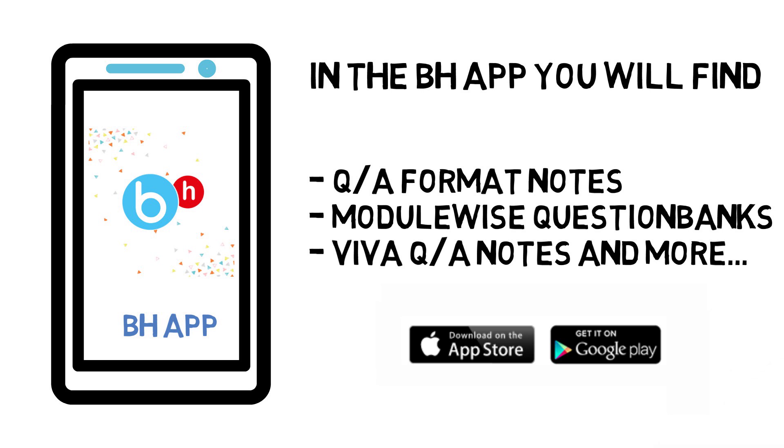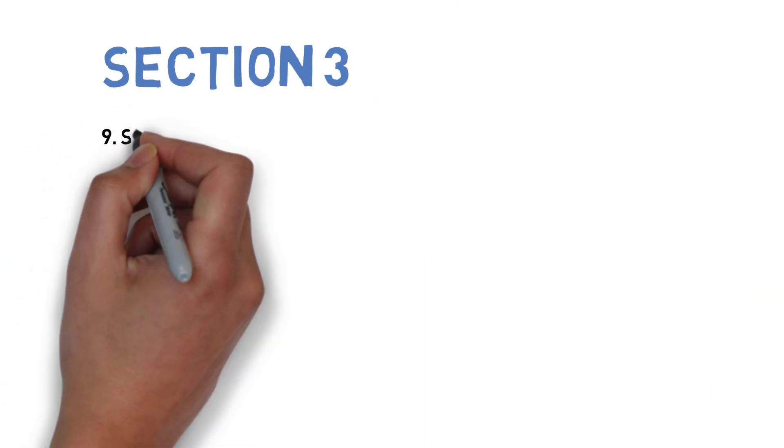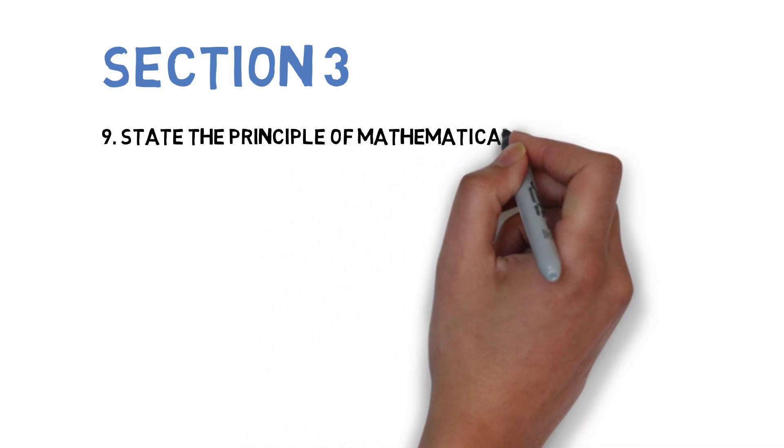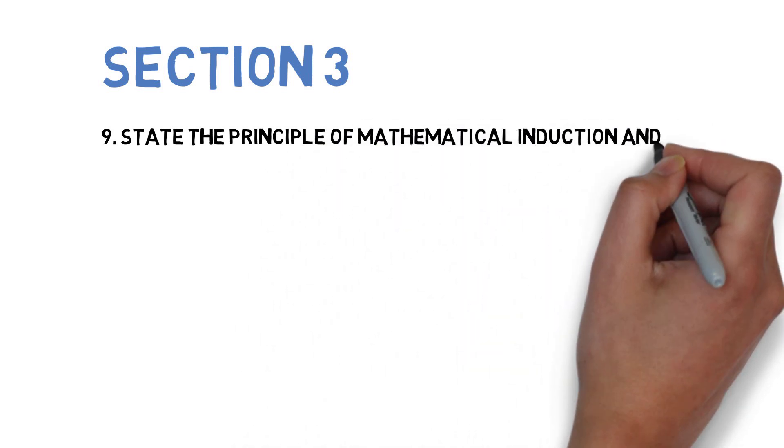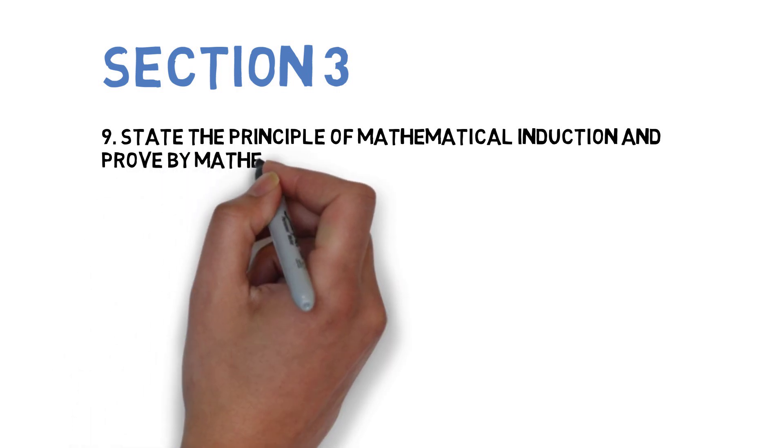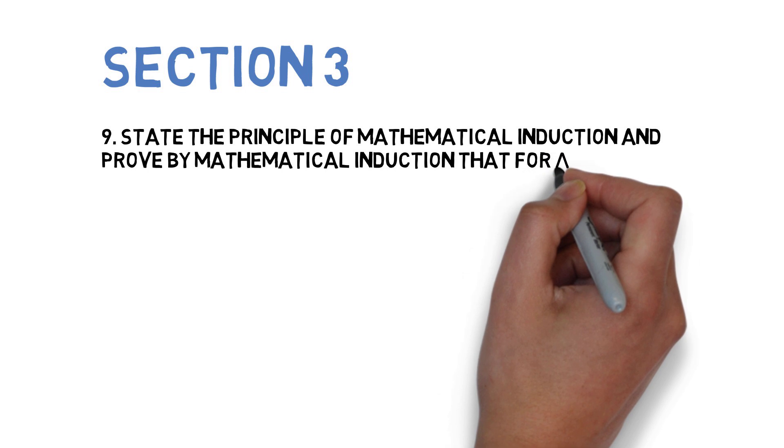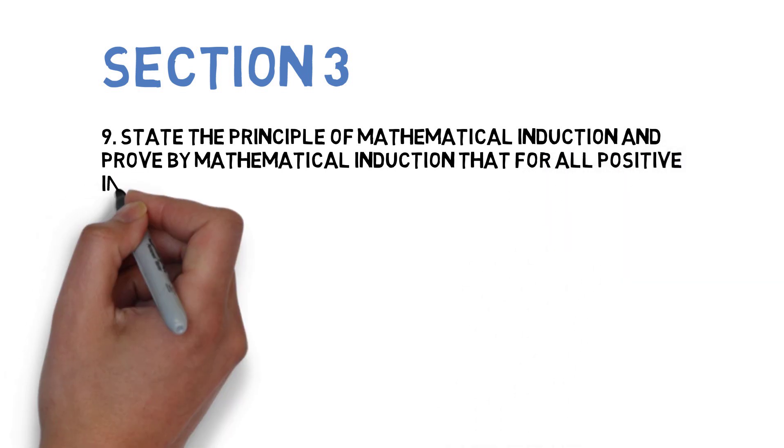Let's go to Section 3, wherein the first question is: State the principle of mathematical induction and prove by mathematical induction that for all positive integers n, 1 plus 2 plus 3 plus so on plus n equals n(n+1)/2.